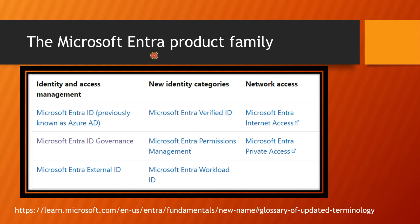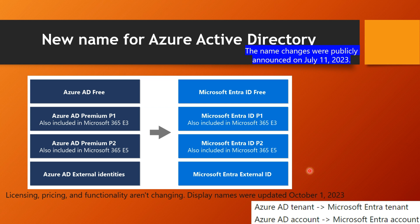For those new to these changes, here are the direct mappings: Azure AD is now called Microsoft Entra ID. The free tier is now Entra ID Free. Azure AD Premium P1 is now Microsoft Entra ID P1. Azure AD Premium P2 is now Entra ID P2.